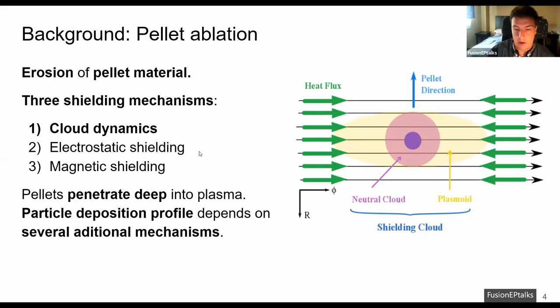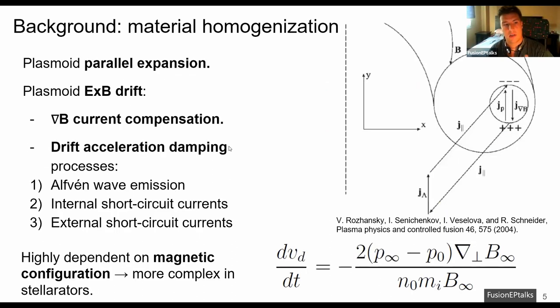However, the final pellet material deposition in the plasma depends on several additional mechanisms. This material homogenization process is mainly governed by the plasmoid parallel expansion that lasts until the plasmoid and the plasma pressures are equilibrated. During this expansion,